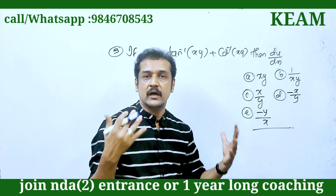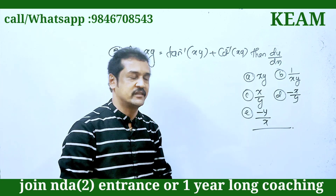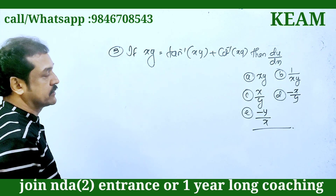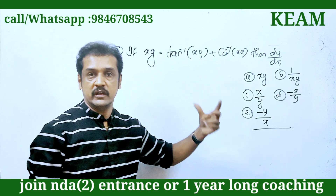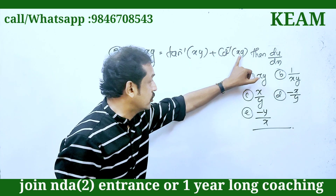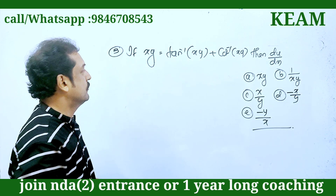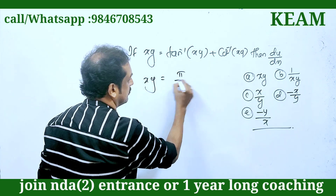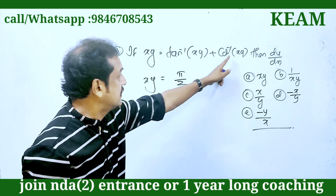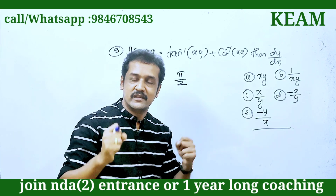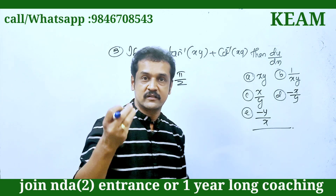If y is equal to tan⁻¹(xy) plus cot⁻¹(xy), find dy/dx. The key identity: tan⁻¹ plus cot⁻¹ of the same argument equals π/2. So y equals π/2, which is a constant. Differentiating implicitly: this is a product, so x·(dy/dx) plus y·1 equals 0.